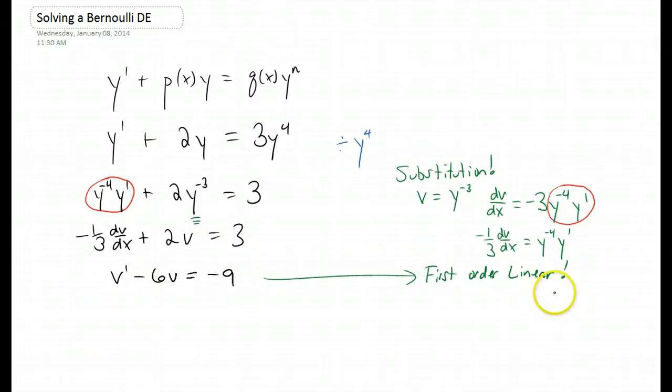And this always happens. We're always going to divide through by y to the n. Our substitution is always going to be y to whatever power turns out right here. And we're always going to end up with a first order linear differential equation.